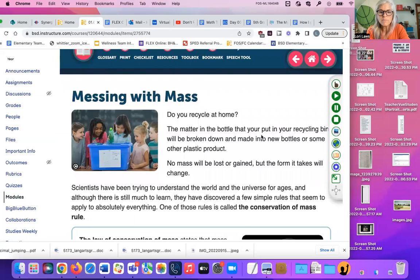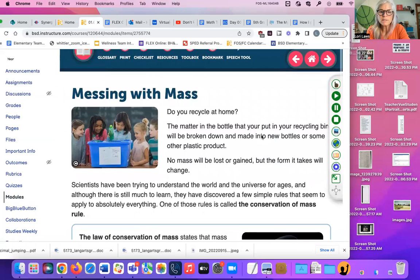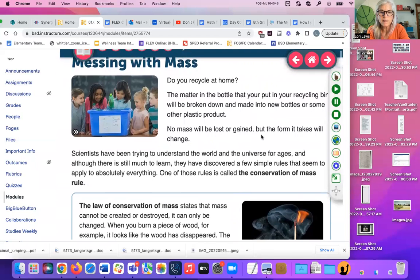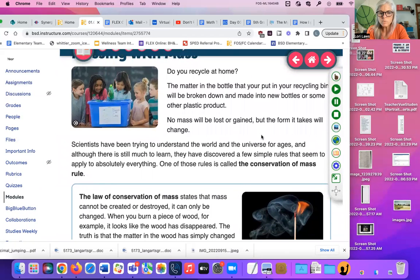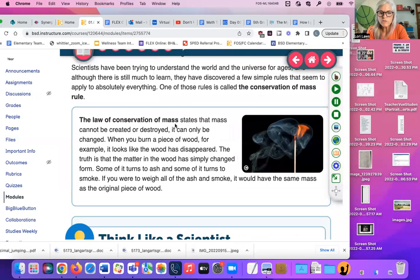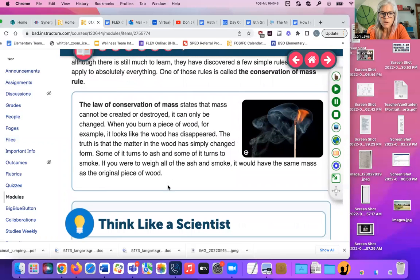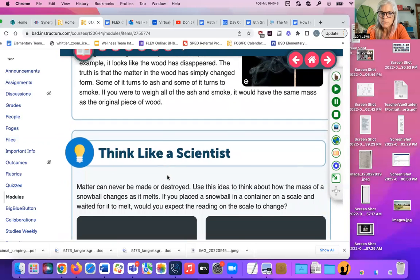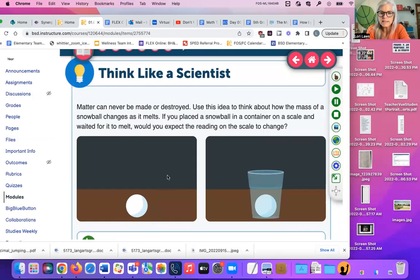Messing with mass. Do you recycle at home? The matter in the bottle that you put in your recycling bin will be broken down and made into new bottles or other plastic products. No mass will be gained or lost, but the form it takes will change. The law of conservation of mass states that mass cannot be created or destroyed. It can only be changed. When you burn a piece of wood, for example, it looks like the wood has disappeared. But the truth is the matter in the wood has simply changed form. Some of it turned to ash and some turned to smoke. If you were to weigh all the ash and smoke, it would have the same mass as the original piece of wood.